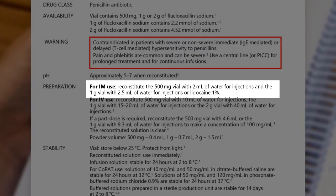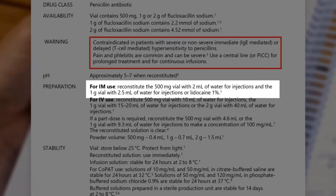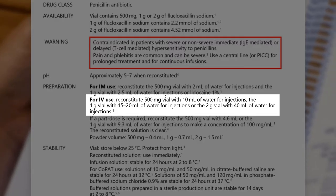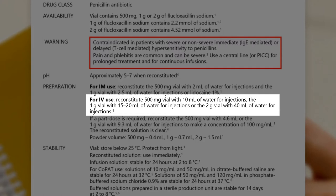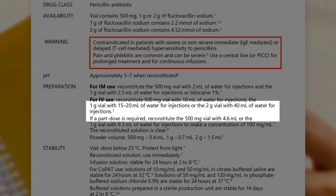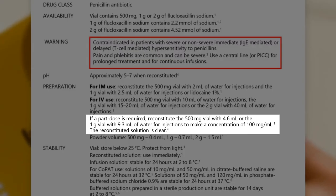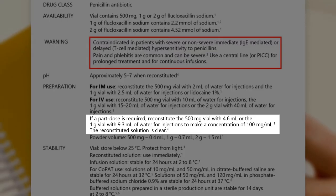If you are giving a 1g dose by IM injection, you will reconstitute the vial with 15–20 ml of water for injections. You would never use lidocaine to reconstitute a dose for IV injection. There are also instructions for giving a part dose – where the dose you need to give is less than the full amount in the vial. For example, you would need to use a 1g vial to give a dose of 750mg, which might be necessary because the patient is a child. To measure the dose correctly, you need to know the exact concentration of the solution after reconstitution, taking into account the displacement value of the powder.